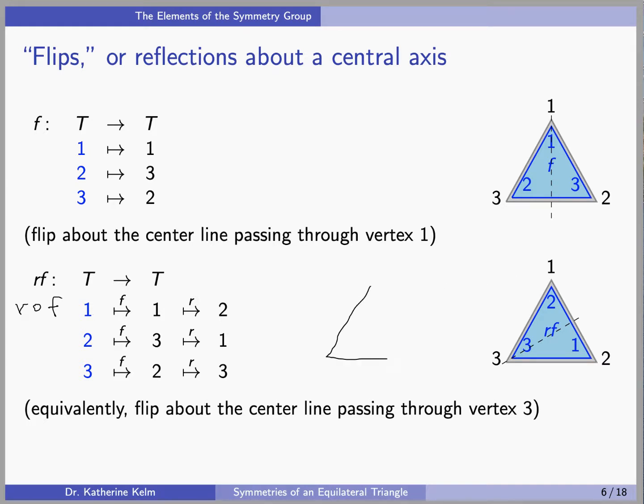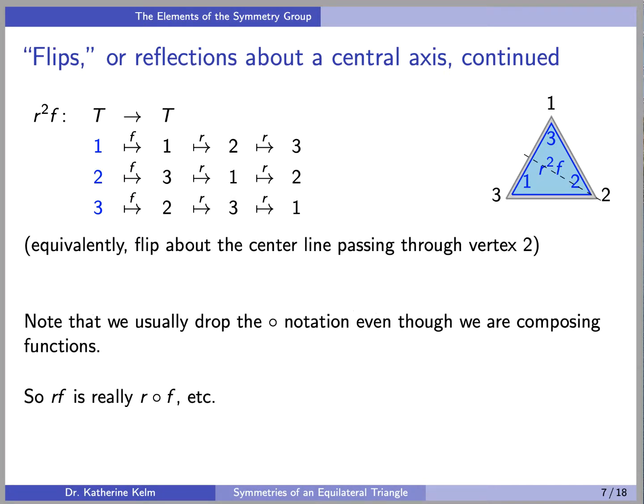Recall that the home position for the triangle is like this: 1, 2, 3. And finally, the last move is going to be R squared F. So that's going to do the function F first, followed by R, and then by R again. So you can check then that 1 is going to get sent to 3, 2 is going to get mapped to 2, and 3 is going to get assigned to 1.